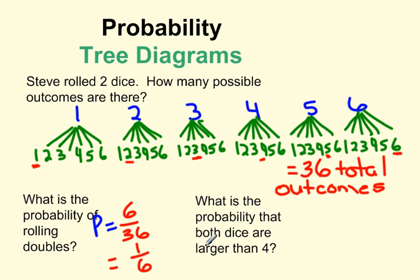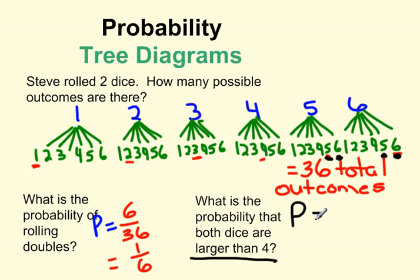What is the probability that both dice are larger than four? That doesn't include four — it has to be larger. Values of one, two, three, or four on the first die won't count. So I'm only looking at the section of my tree where the first die shows five or six. If I roll a five first, I need a five or six on the second die. Same if I roll a six first. So there are only four possibilities out of our grand total of 36 outcomes. This reduces — both divisible by four — to one over nine.